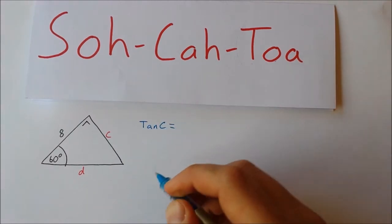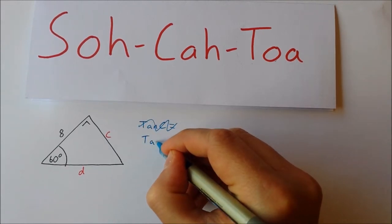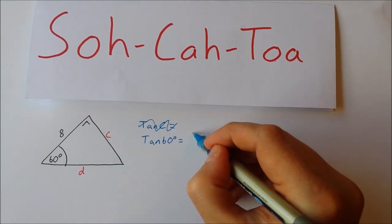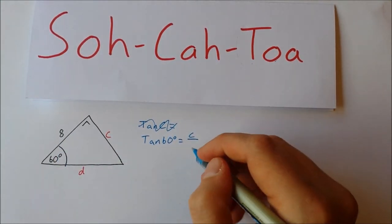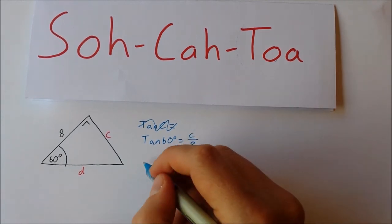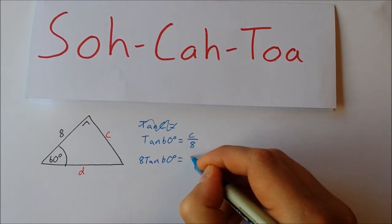The tan of... sorry, that's the tan of 60, is equal to c over 8. Same thing again, let's multiply across by 8, so 8 tan(60°) = c.